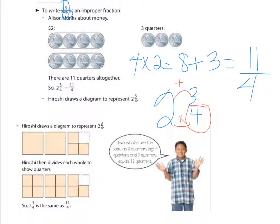Drawing a picture also helps quite a bit. He's taken two complete squares and three-fourths of a square, then divides those two wholes into fourths. And then you just count: one through eleven — so drawing a picture works really well. And the math way works really well too. Two ways that you can convert your mixed number into an improper fraction.